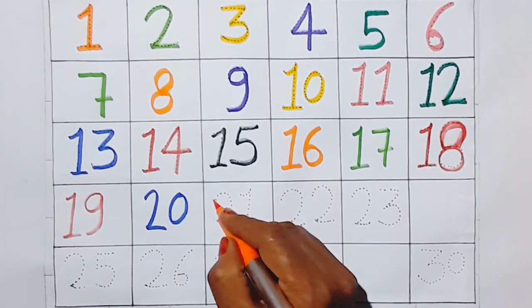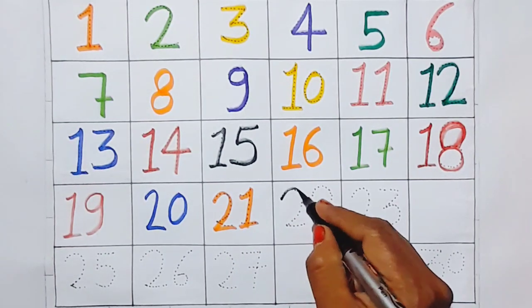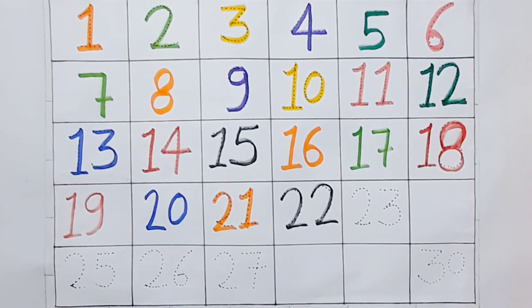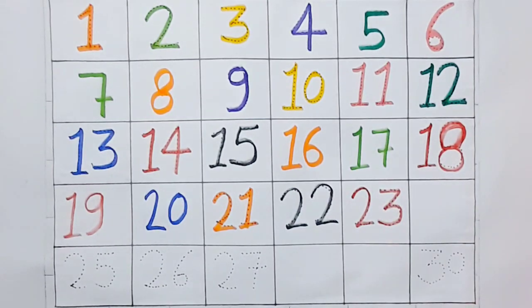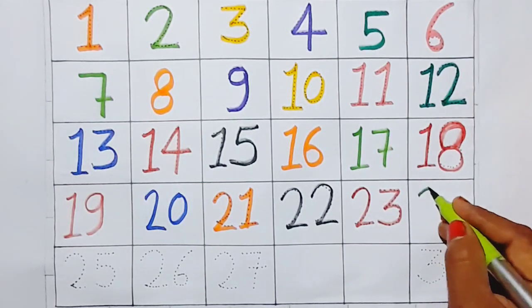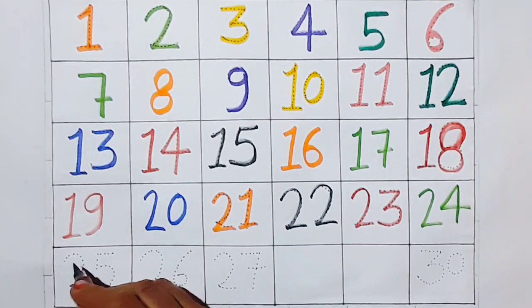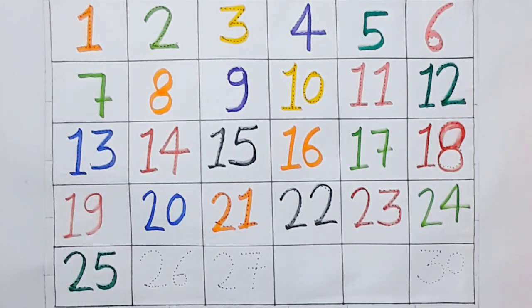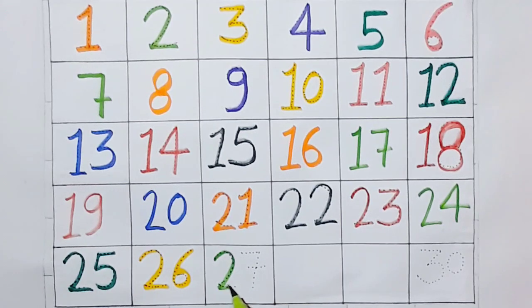Yaar vachyo. Twenty one. Twenty two. Twenty three. Twenty seven. Twenty four. Twenty five. Twenty six.